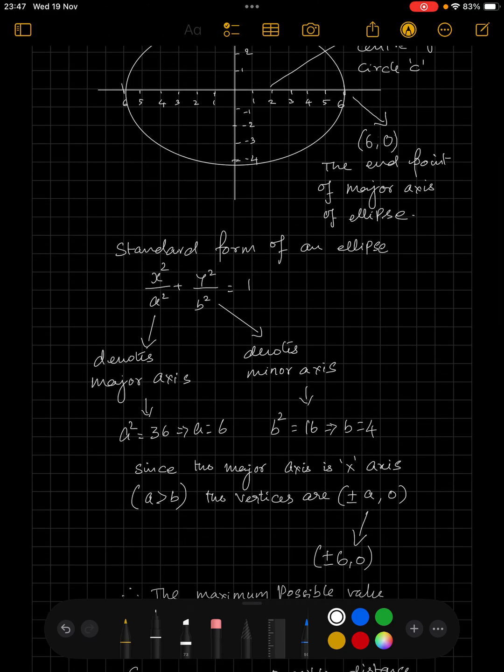In this standard form of an ellipse, a square denotes major axis and b square denotes minor axis, and by substituting the values of 36 and 16 in a square and b square, we get a is equal to 6 and b is equal to 4.